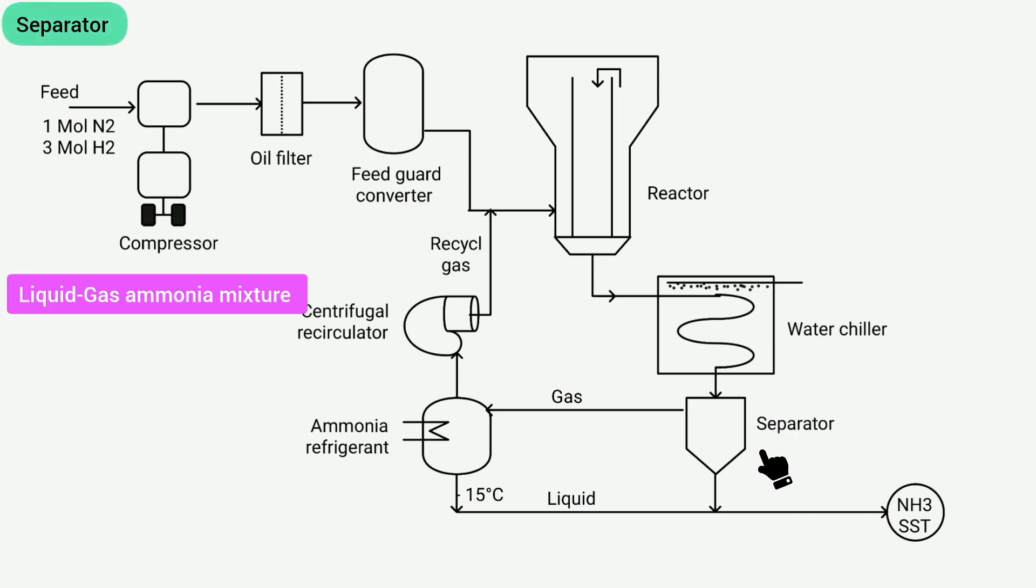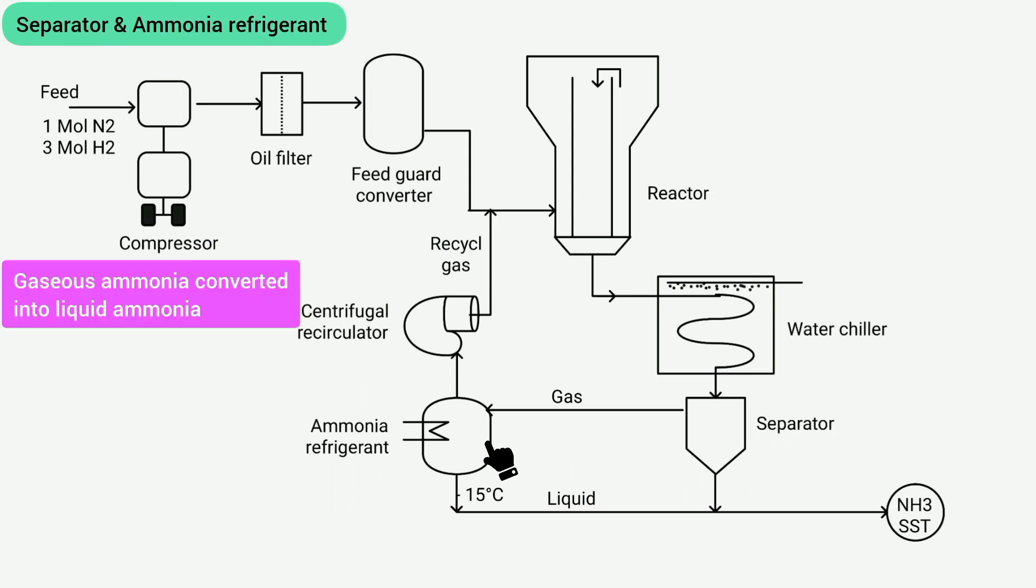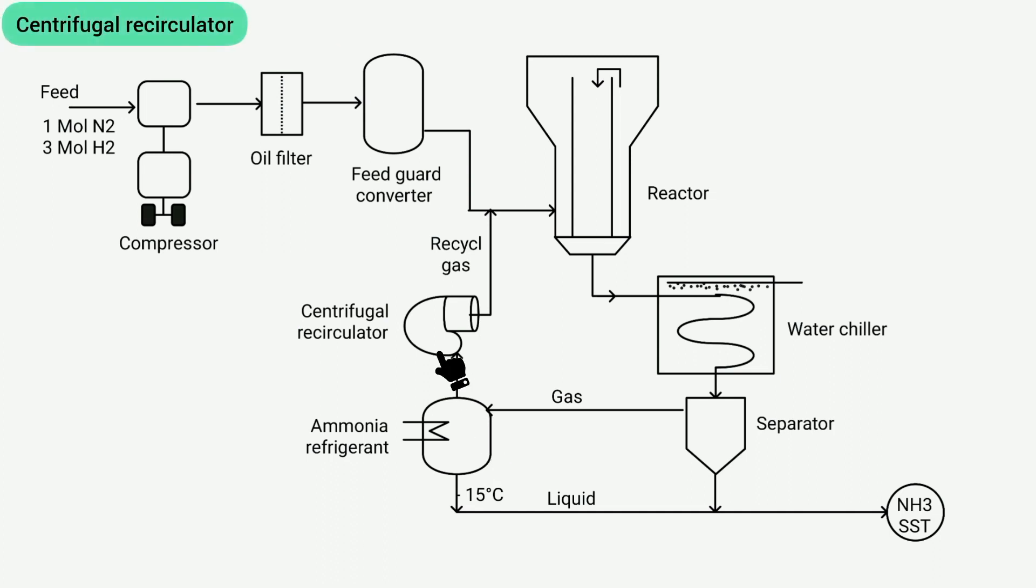This is called separator, which separates liquid ammonia and gaseous ammonia. And this is called ammonia refrigerant, by which the gaseous ammonia obtained from the separator is converted into liquid ammonia whose temperature is minus 15 degrees Celsius. It is equipped with a centrifugal recirculator, which is a kind of pump that sends unreacted gas for recycling and small purge stream to prevent the accumulation of diluents such as argon.